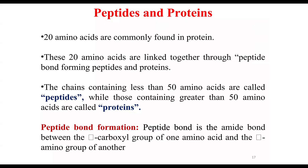We start with amino acids. Amino acids contain a carboxyl group, an amino group, hydrogen, and an R-side chain. This R-side chain is specific to each amino acid — it is what actually makes one amino acid differ from another.